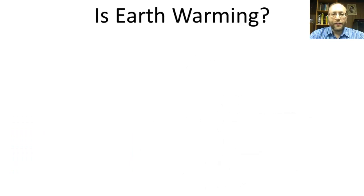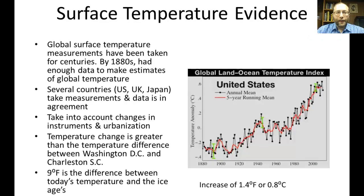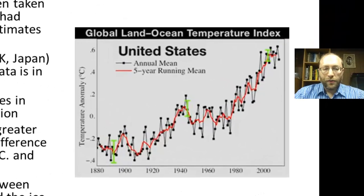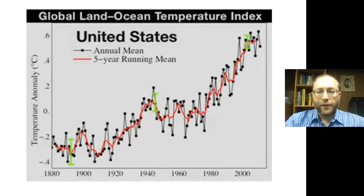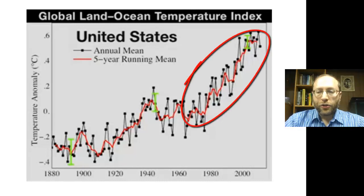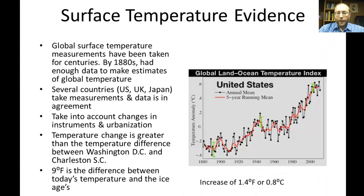The next part looks at the evidence to see if the Earth is warming. Global surface temperature measurements have been taken for centuries, but only in the 1880s did we have enough data to make estimates of global temperature. On this graph, I show measurements taken by the United States covering both land and ocean, going from 1880 to about 2010. The temperature has been steadily increasing, with the increase markedly greater in the last 30 years. When you look at graphs produced by the United Kingdom and Japan, their data basically matches the U.S. data.